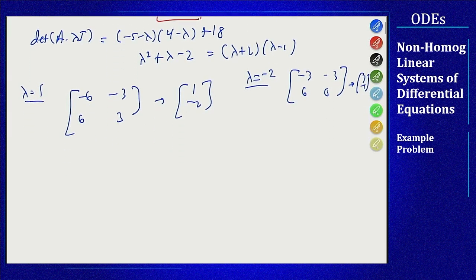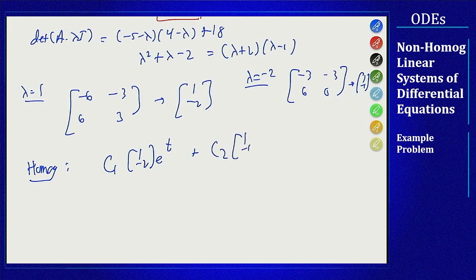So that means for the homogeneous, our general solution is C1 times 1 minus 2 e to the t plus C2 times 1 minus 1 e to the minus 2t. Now we can look at our method of finding the non-homogeneous solution.